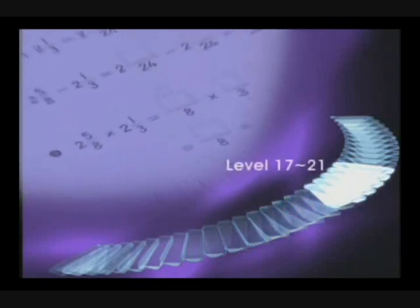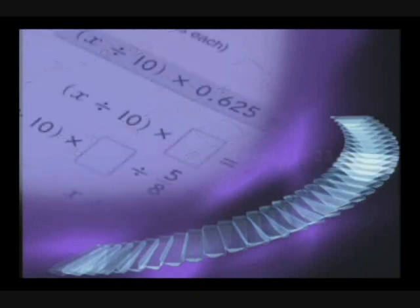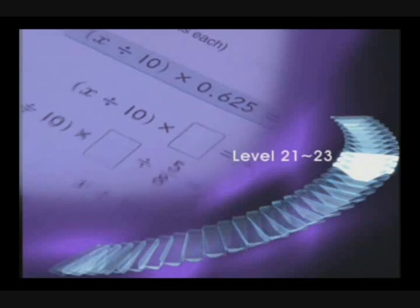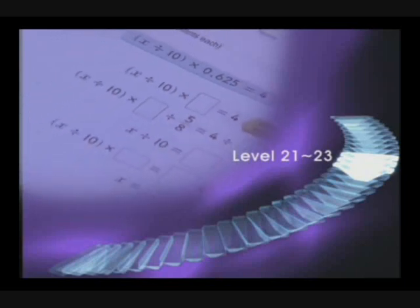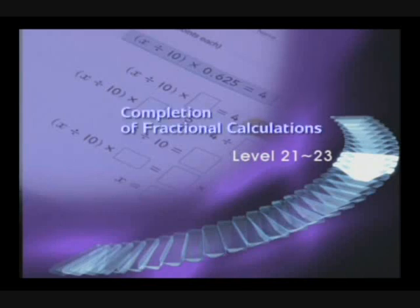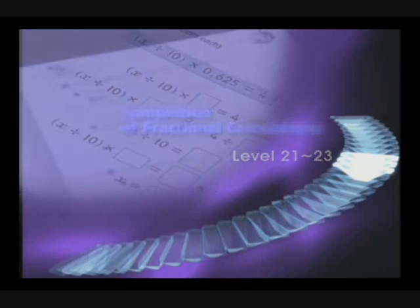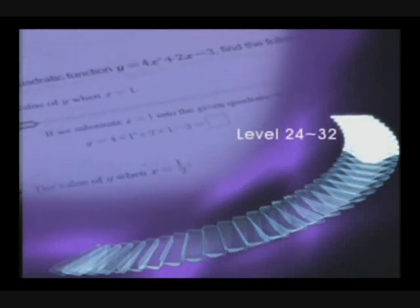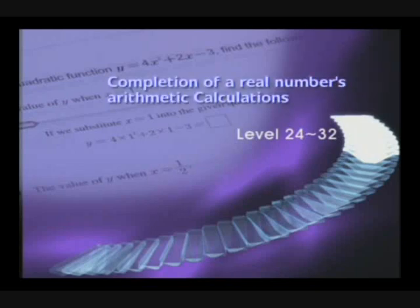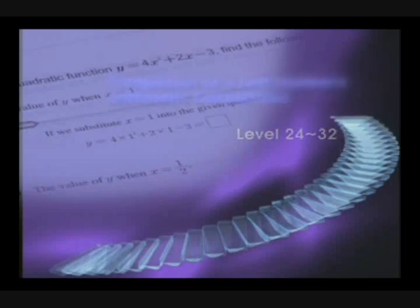In levels 17 through 21, the 4 operations of fractions are learned, and in levels 21 through 23, the 4 operations of fractions are studied and equations and word problems are also studied. By doing so, the calculation of fractions is completed. In levels 24 through 32, positive numbers and negative numbers are calculated. Simple equations and quadratic equations are solved and functions and statistics are learned. Through all this, the 4 operations of real numbers are completely learned.